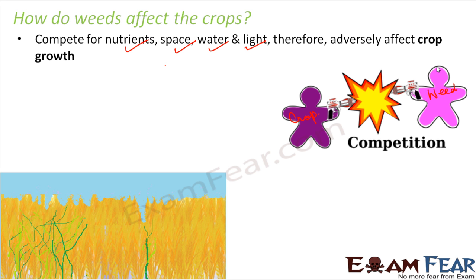Weeds can sometimes grow so much that the space occupied by weeds equals the space of the desired crops — that becomes a disaster situation. We've put in so much effort to plow the field, water it, and provide manures and fertilizers, just to give crops the best nutrients, water, and light. Instead, the weeds are taking advantage of all that. So we need to kill the weeds.